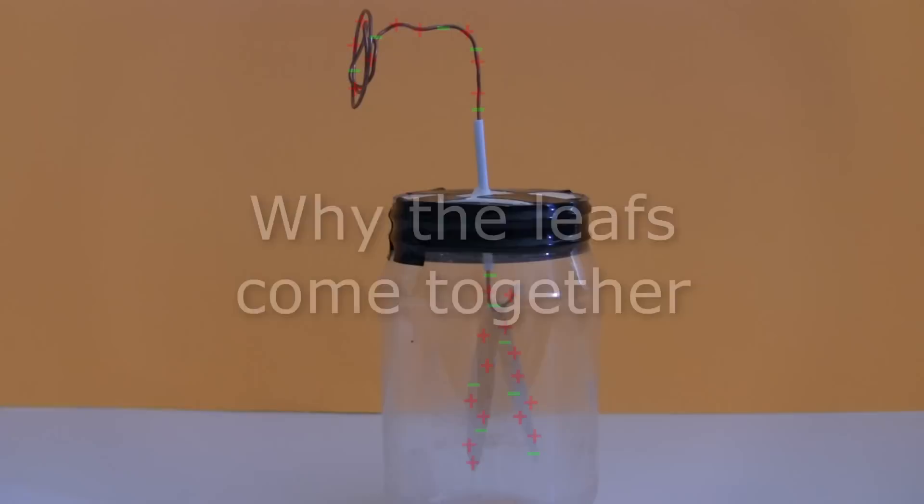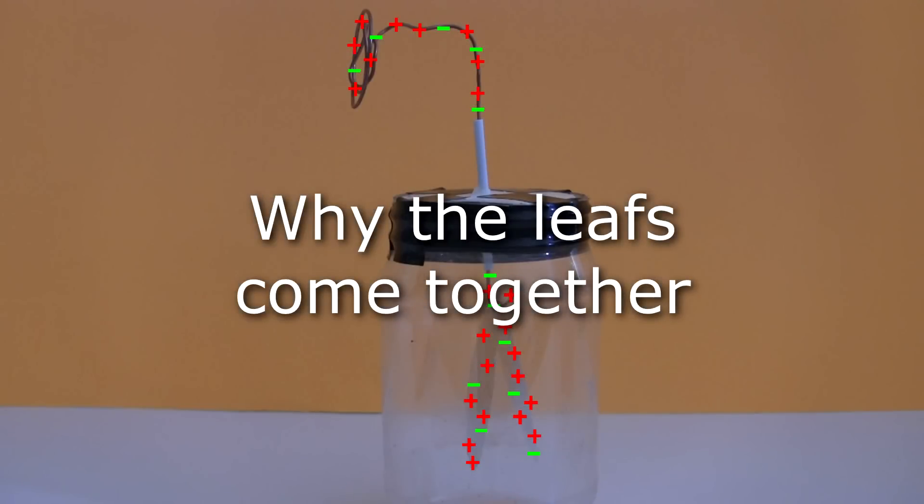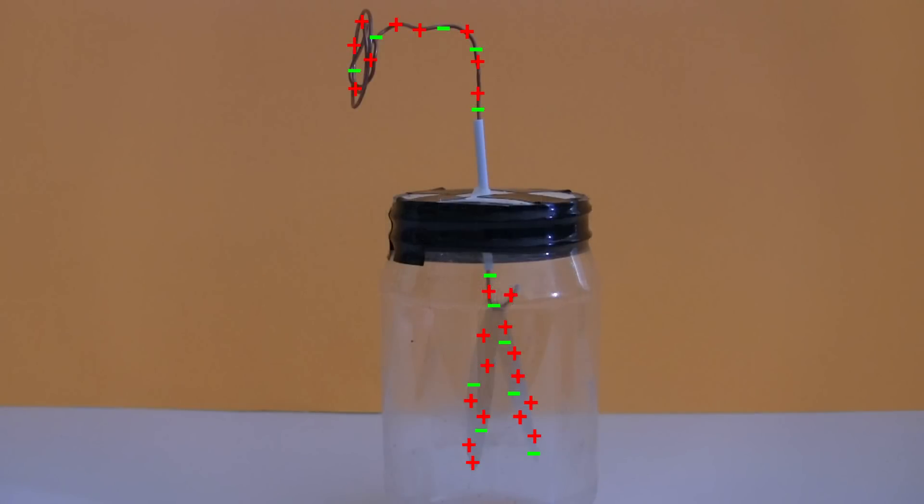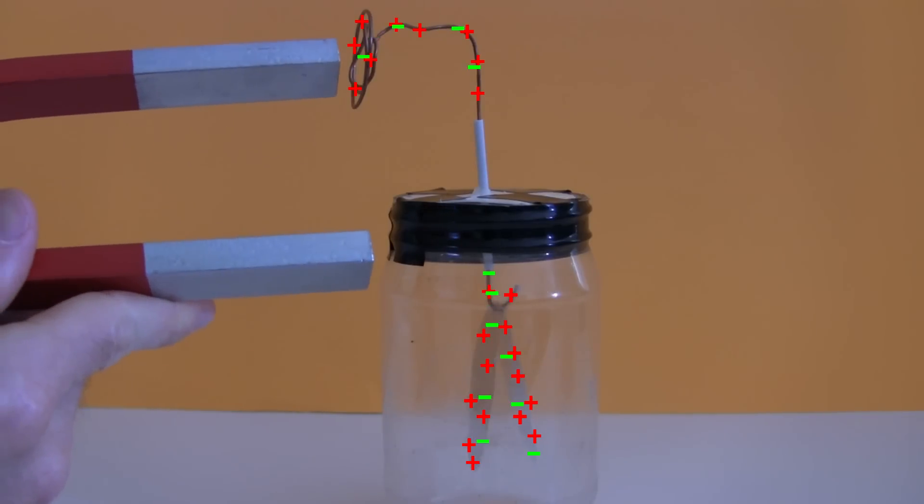And here's an explanation of why. Due to the way this electroscope was charged, the entire electroscope has a positive charge. There are more positive protons than negative electrons. When the magnet is brought close to the terminal, the terminal's positive charge attracts negative electrons to the end of the magnet closest to the terminal.